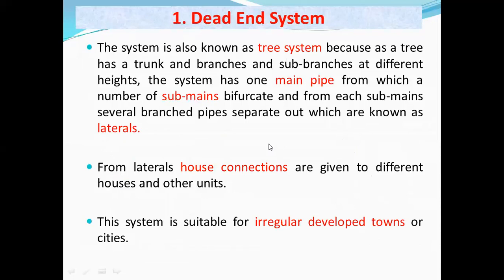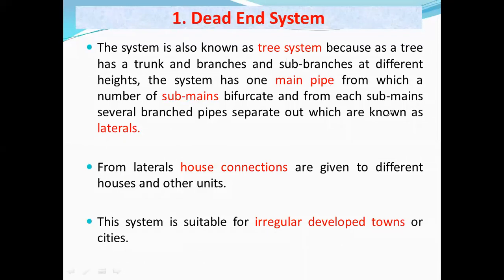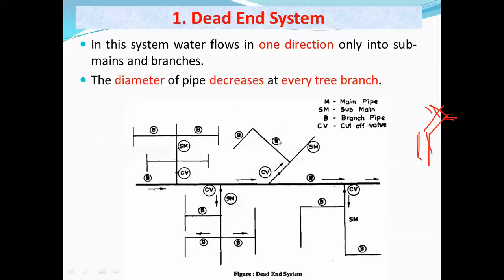The first one is the dead-end system, also called the tree system. It is called a tree system because a tree has one trunk, from which there is a main branch, and from that main branch there are different sub-branches. Likewise, in this system there is a main pipeline, to which there are connections of sub-mains, and to each sub-main there are connections of branch pipes and laterals. Its layout is similar to the shape of a tree.